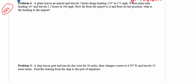All right, so without further ado, let's go ahead and get this party started. Number four says a plane leaves an airport and travels for two hours along a 120 degree heading at a speed of 175 miles an hour. It then takes a turn onto a heading of 30 degrees and travels an additional two and a half hours at a rate of 200 miles an hour. This question wants us to determine how far it is from the airport, and from its last position, what is going to be the heading back to the airport.